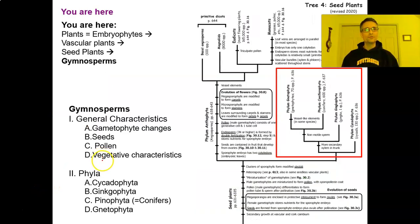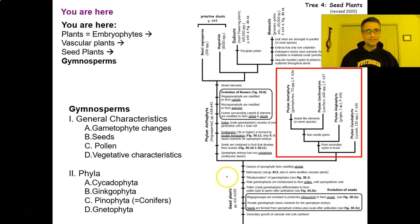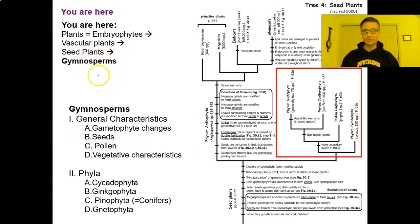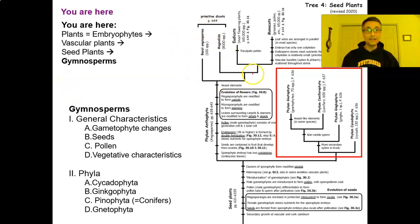This is our fourth and final tree for major groups of plants: the seed plants. Within seed plants we have two groups — gymnosperms and angiosperms. A gymnosperm uses a very old definition: sperm means seed, and gymno means naked or uncovered. So we're looking at naked-seeded plants. Next lecture we'll look at angiosperms, or covered, contained plants.